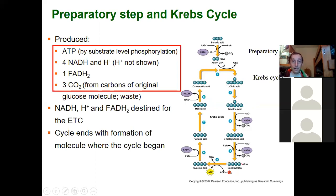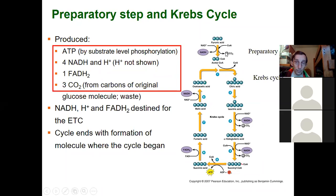The two carbons of acetyl coenzyme A are converted into CO2 — one here and one in the Krebs cycle. The preparatory step and the Krebs cycle run two times for every molecule of glucose. We have three CO2s from one cycle of the preparatory step and Krebs cycle, and these cycles run twice for a molecule of glucose. So all six carbon atoms of glucose are converted into CO2. That's why we breathe out CO2 — because of aerobic respiration.